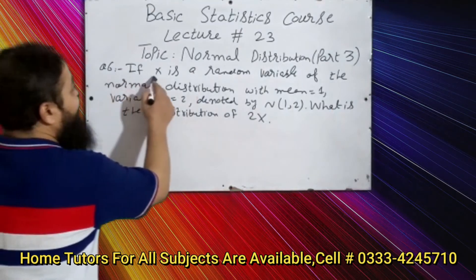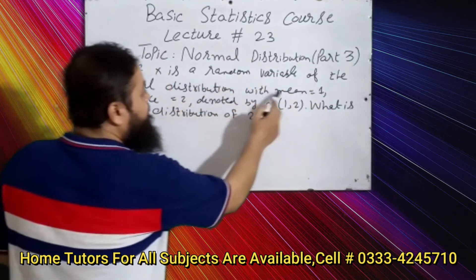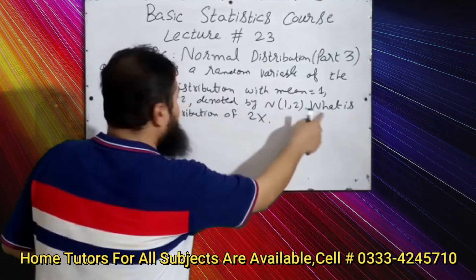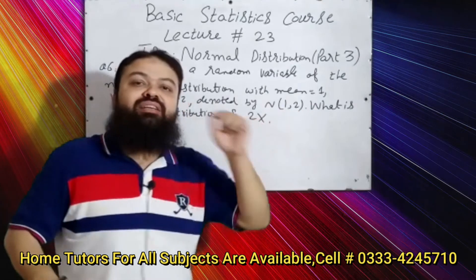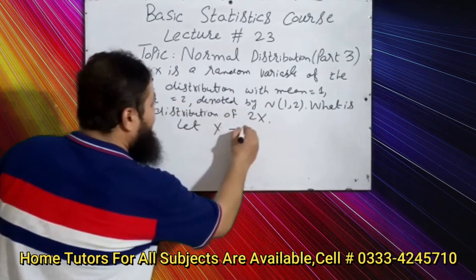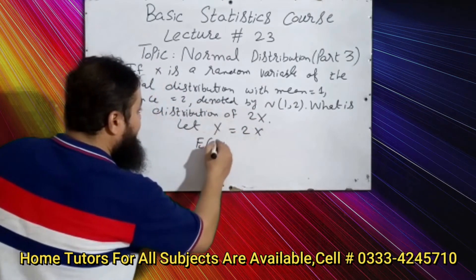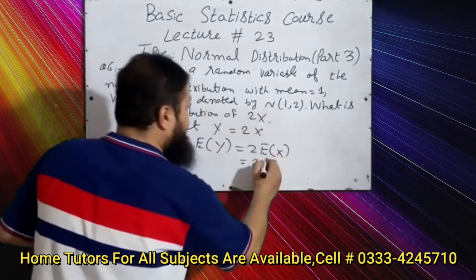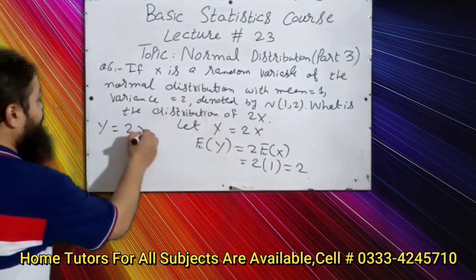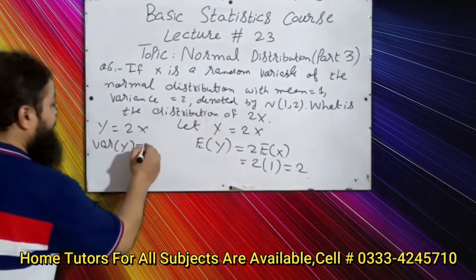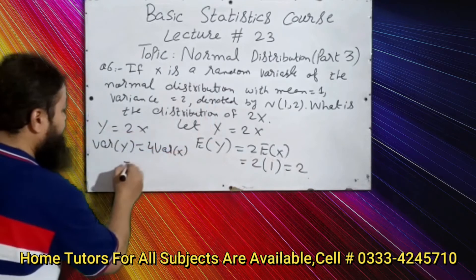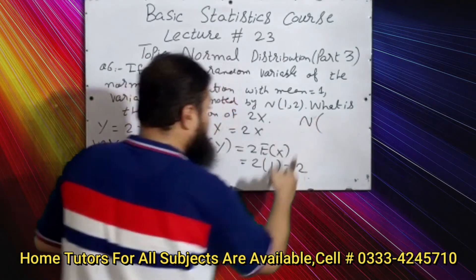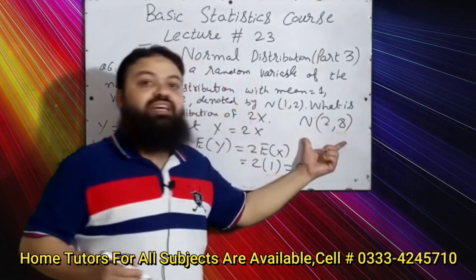Question number six: if X follows normal distribution with mean = 1 and variance = 2, what is the distribution of 2X? Let Y = 2X. Apply expectation: E(Y) = 2·E(X) = 2 × 1 = 2. Apply variance: Var(Y) = 4·Var(X) = 4 × 2 = 8. So the correct option is that 2X follows normal distribution with mean 2 and variance 8, i.e., N(2, 8).